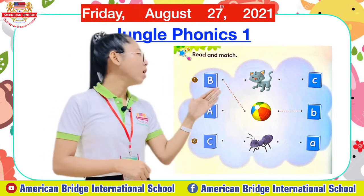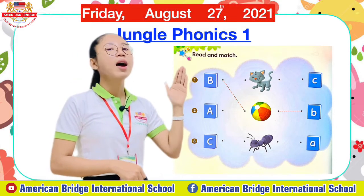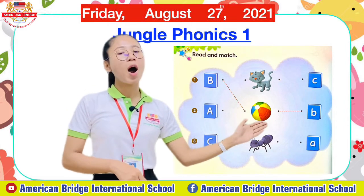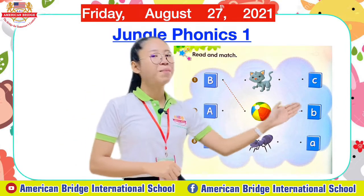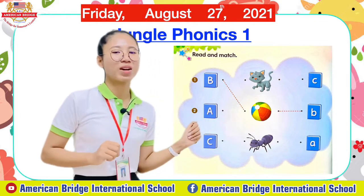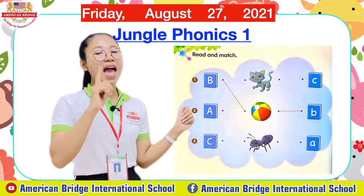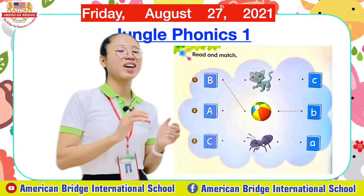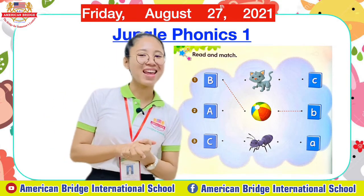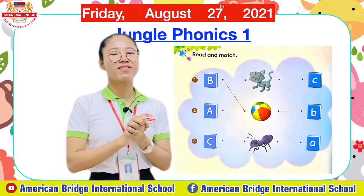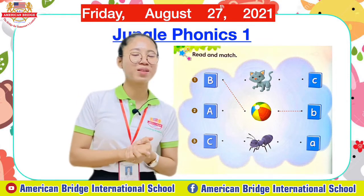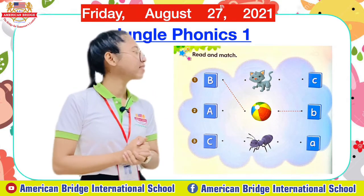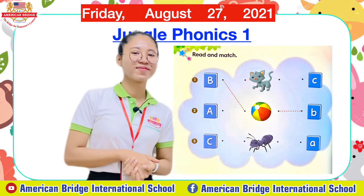The sample is letter B, or sound 'b'. We need to trace it to our ball and then match to the small letter B. Can you trace it? Great job! Now for the two remaining ones, you need to do it by yourself. Teacher will give you one minute to do it.